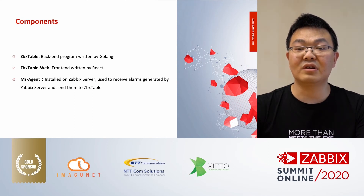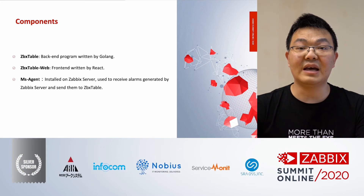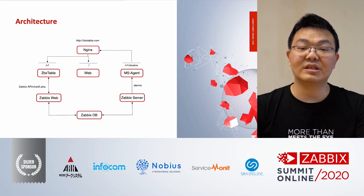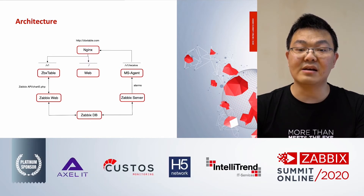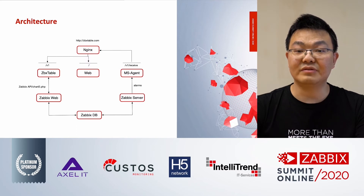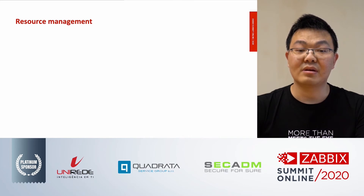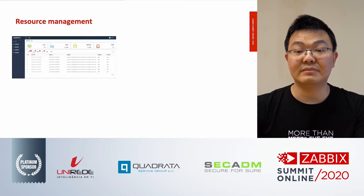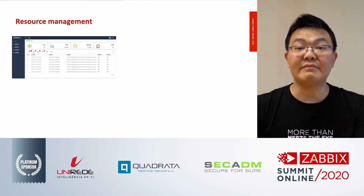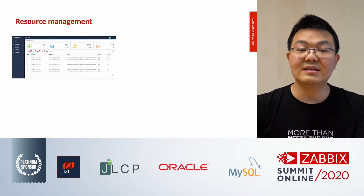MIS Agent exposes alarms from topics and sends them to ZBX Table. This is the architecture. The Zabbix configuration already provides the existing configuration fields — just replace it. And this is the screenshot of the system. This is the main page, which includes assembling the host and some real-time alarms. System states are grouped by the container.